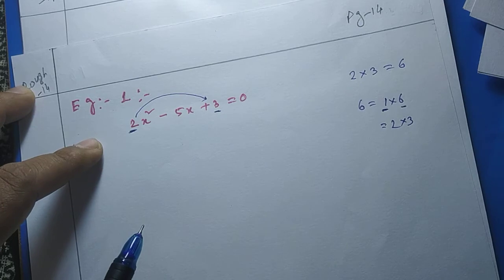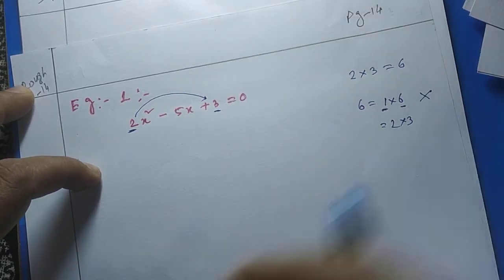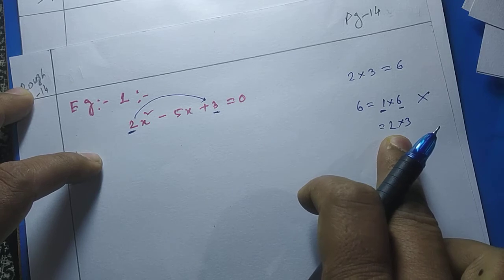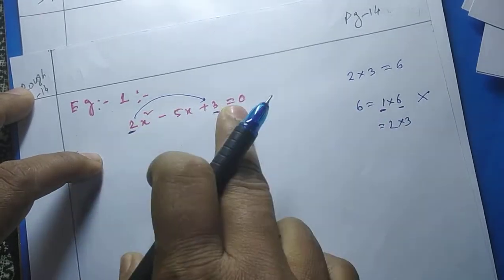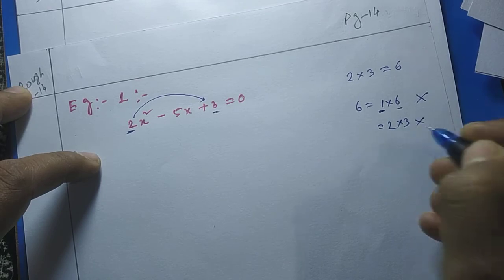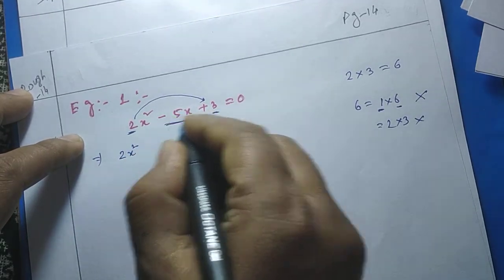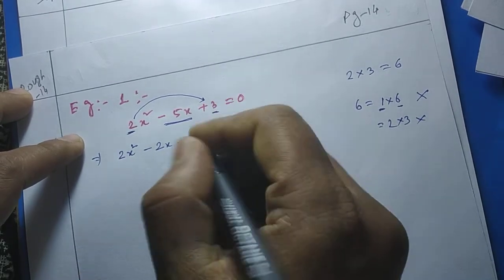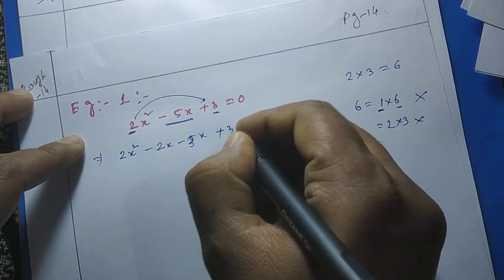But the problem is that 1 and 6 are not matching with the coefficients 2 and 3 in the equation, so we cannot take that combination. Now let us consider 2 and 3. Using 2 and 3 we can get −5 in the middle, and 2 and 3 also match the other coefficients. So it is acceptable. Therefore the middle term −5x is rewritten as −2x − 3x, and the equation becomes 2x² − 2x − 3x + 3 = 0.